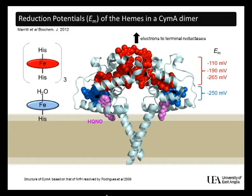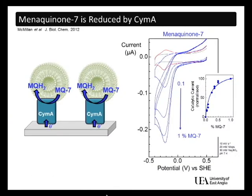The properties of SimA were explored further by protein film voltammetry. The red voltammogram shows the redox properties of the hemes are not perturbed by adsorbing SimA on the electrode. When liposomes containing M7 are introduced into the experiment, the voltammogram changes to show catalytic reduction waves, illustrated here by the blue voltammograms, that reflect the SimA-dependent reduction of M7.